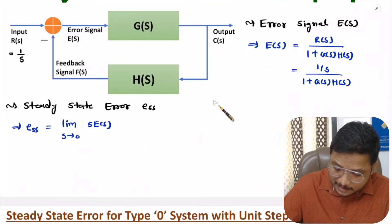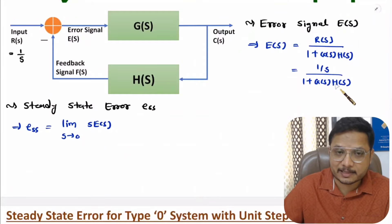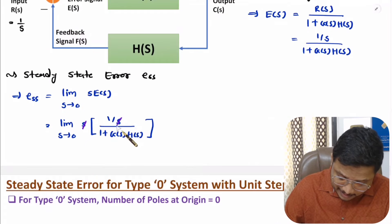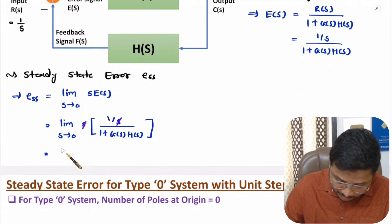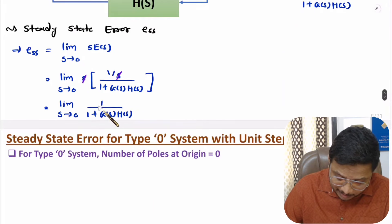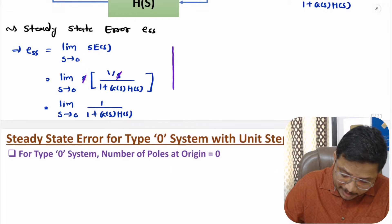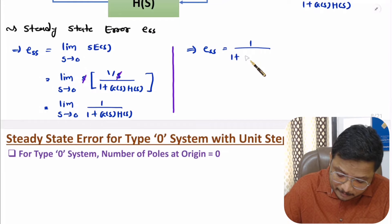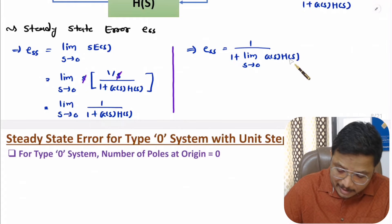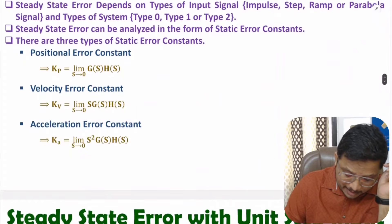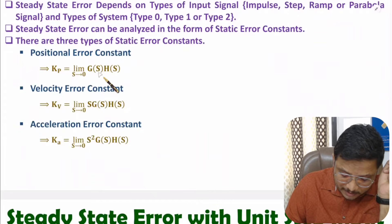Here, E(s) is 1/s divided by 1 plus G(s)H(s). Let us substitute that. This s and this s are getting cancelled, so we can further simplify this. Now with this limit, we can apply the limit to the numerator as well as to the denominator. In the numerator we will have 1, and in the denominator we will have 1 plus limit s tends to 0 of G(s)H(s). And in my last video, I have explained error constants where positional error constant Kp is limit s tends to 0 of G(s)H(s).